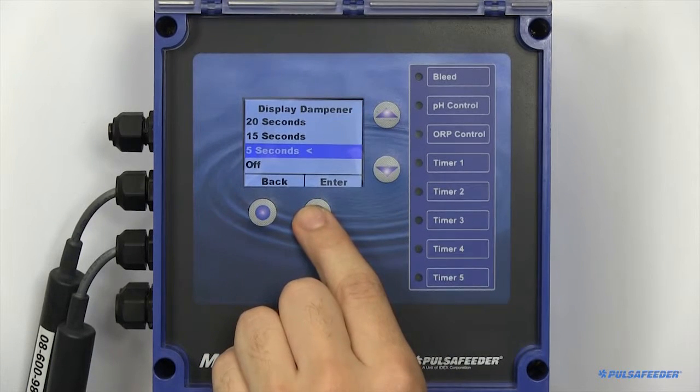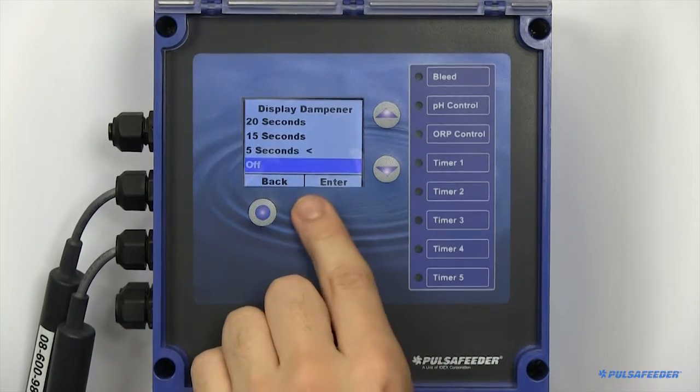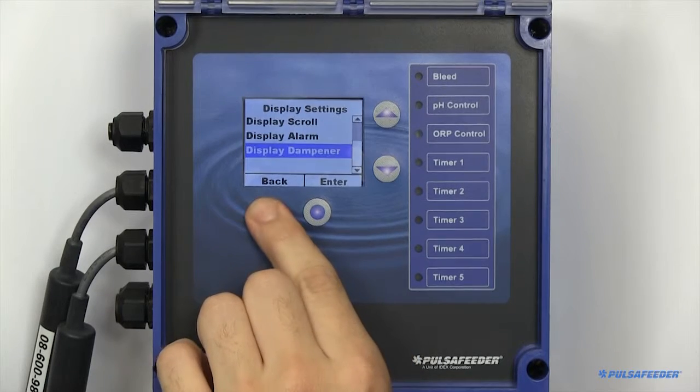Enabling a display dampener will cause your probe readings to be averaged over the specified length of time.